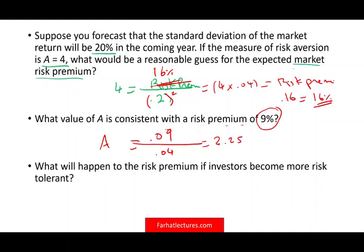Which portfolio would you prefer? Obviously the first portfolio, where my variance is the same 0.04 but my risk aversion is 4 and my return is 16%. Obviously I'll prefer that one.